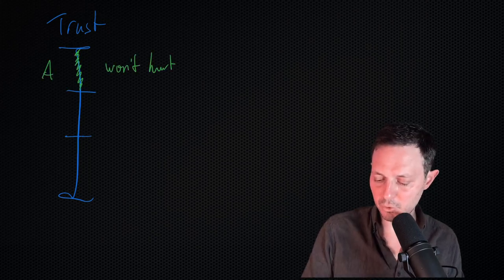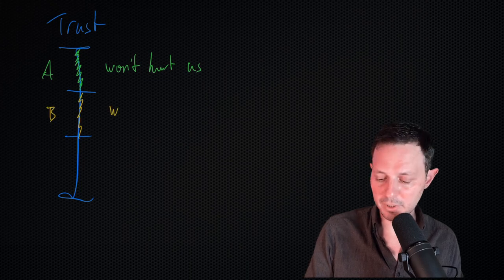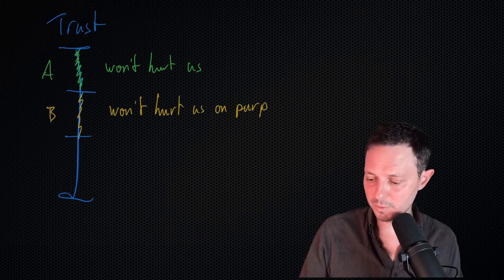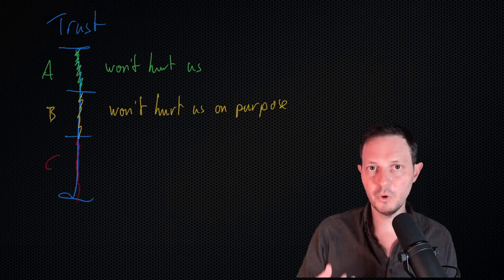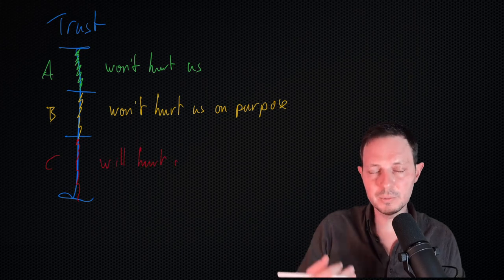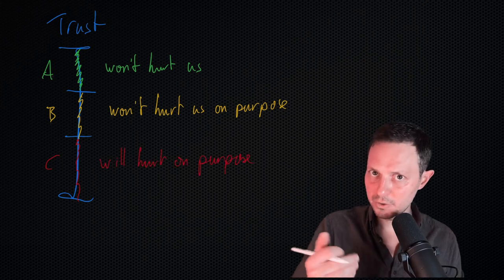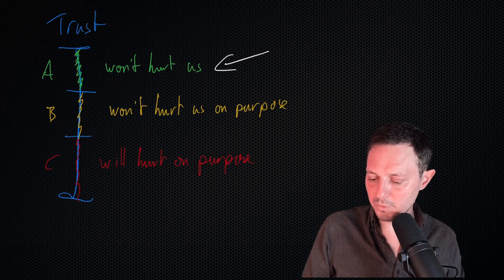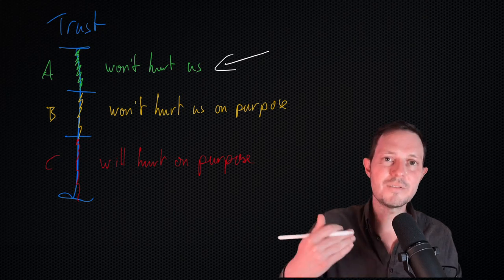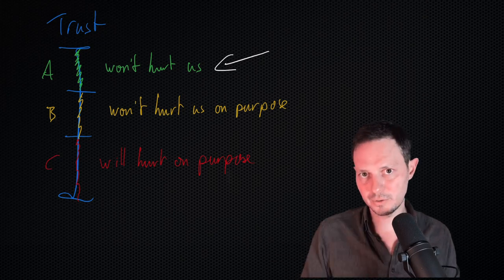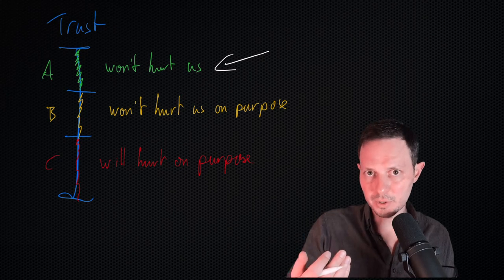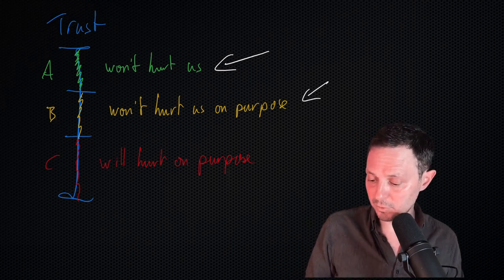Category A will be the people who won't hurt us. Category B, the people who won't hurt us on purpose. And category C are the people who will hurt us on purpose or are okay hurting us on purpose. Most people won't fall into category A because it's very difficult to never hurt other people, even if it's not on purpose. So most people will simply be falling into category B.